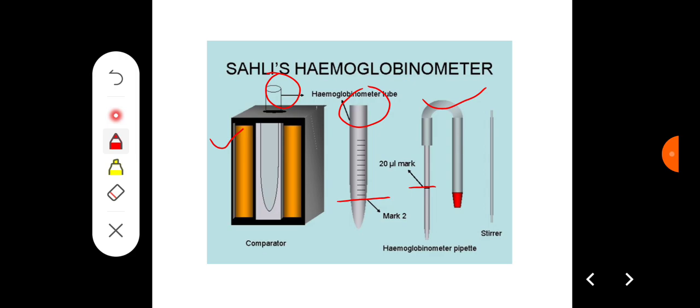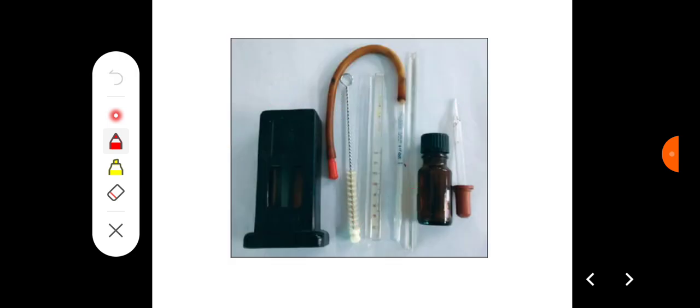Then you have to add this blood with the HCl, N/10 HCl, mix it properly. Then hemoglobin gets converted into acid hematin which is going to impart color, and that color on adding distilled water has to be matched with the color comparator. This is another diagram showing the Sahli hemoglobinometer, Sahli pipette and Sahli tube, and this is Sahli color comparator.